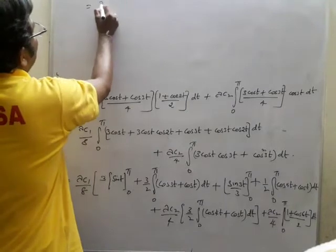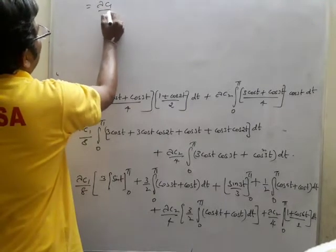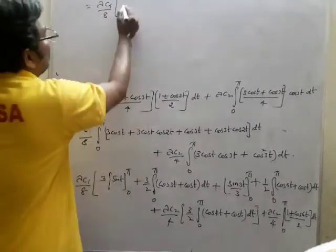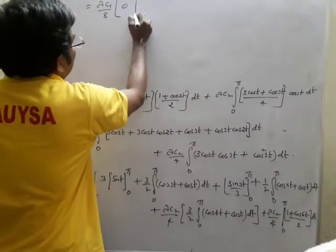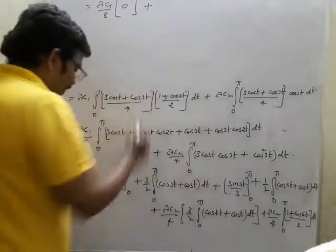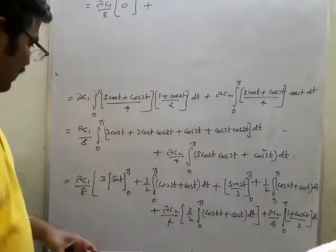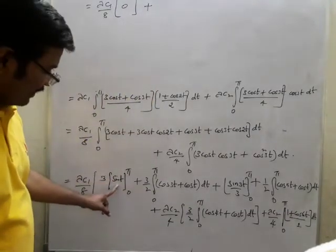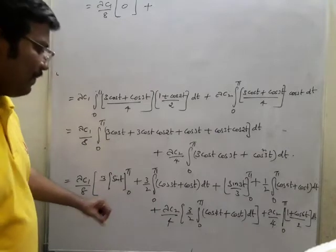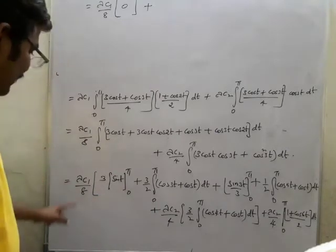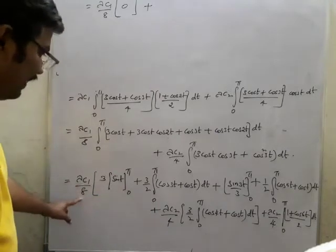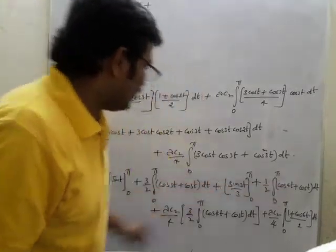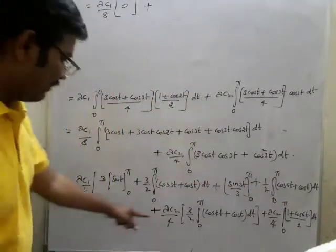This is λ·c1/8 into the integral. You should understand this is 0, because sin(π) is 0 and sin(0) is also 0. So this entire λ·c1/8 term up to here is zero, and then we have λ·c2.